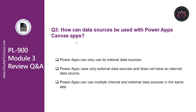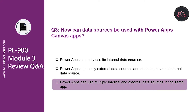Let's look at question number three. How can data sources be used with Power Apps Canvas apps? Is it that Power Apps can only use its internal data sources? No. Is it that Power Apps uses only external data sources and does not have an internal data source? No. The correct answer is Power Apps can use multiple internal and external data sources in the same app. There are over 270 data connectors available, and the ability to build a custom connector if one does not exist.